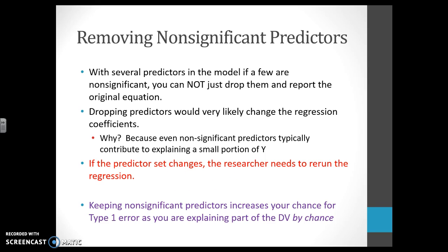Keeping non-significant predictors increases our chance for error, type 1 and even type 2, because we are explaining part of the dependent variable, part of our Y, by chance. We are not significantly explaining it. We are explaining it by chance. I don't like chance.